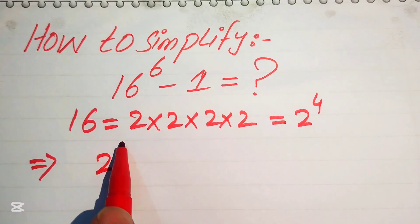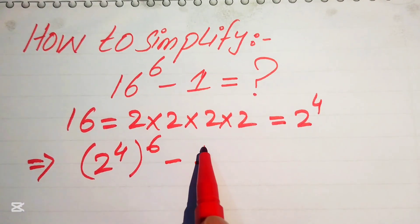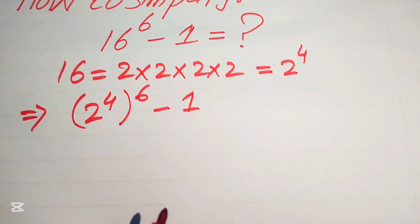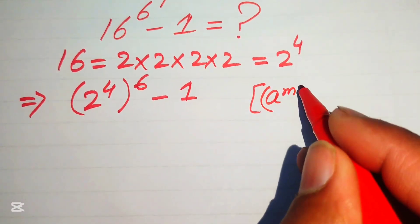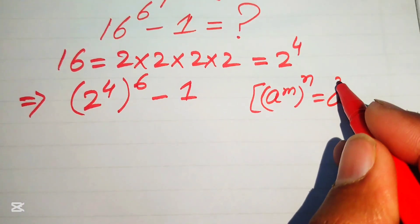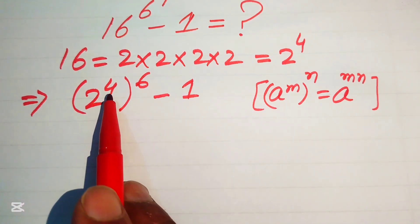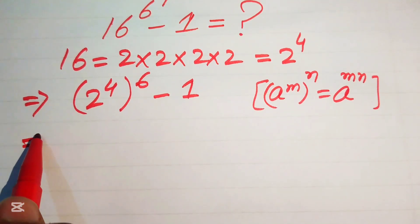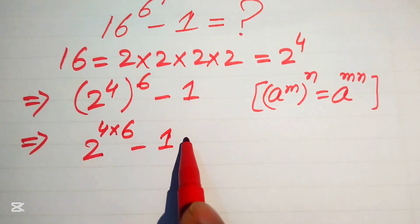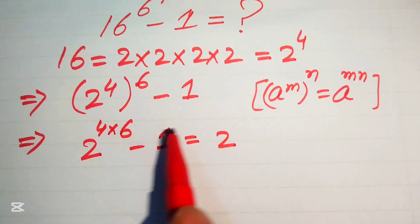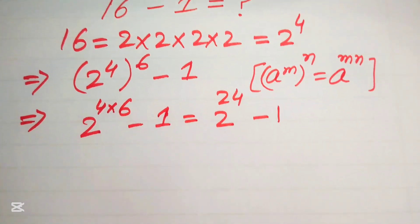Our expression is now written as (2⁴) to the power of (6 minus 1). Here we use the exponent law: a to the power of m, to the power of n, equals a to the power of m times n. So we multiply the exponents: 2 to the power of 4 multiplied by (6 minus 1), which gives 2 to the power of 24 minus 1.